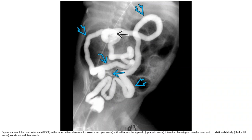In the same patient, contrast enema shows a microcolon with reflux into the appendix and terminal ileum, ending blindly, consistent with ileal atresia.